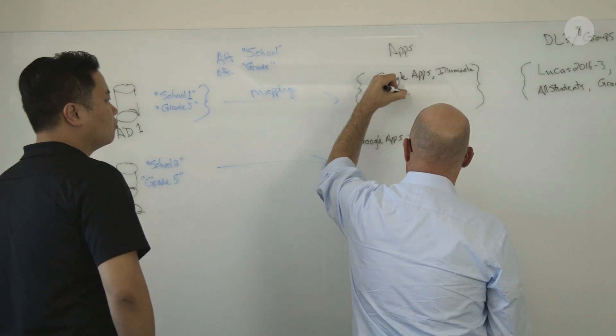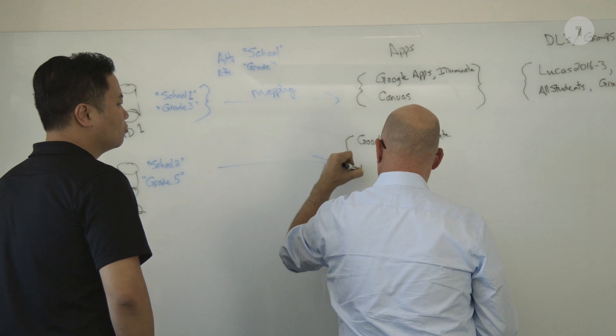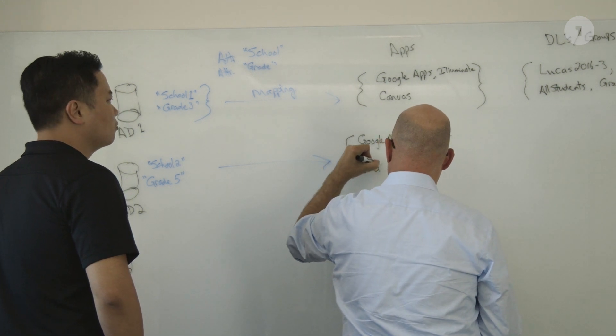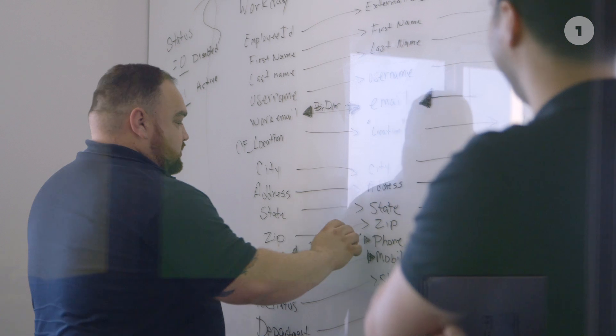We help solve a recurring business problem every year as new students need to be provisioned and outgoing students need to be deprovisioned or moved to alumni status. This is quite a provisioning nightmare because there's no automation in place — it's very difficult to grant users and remote users access to the various applications.